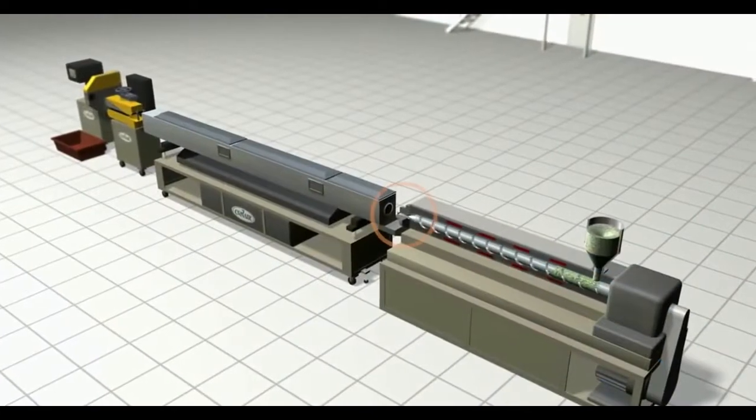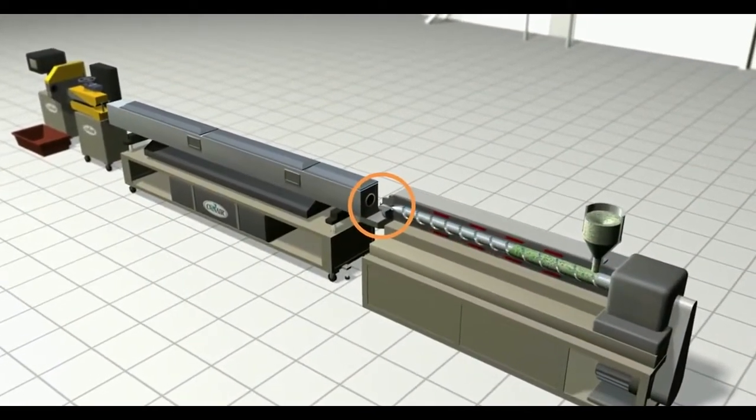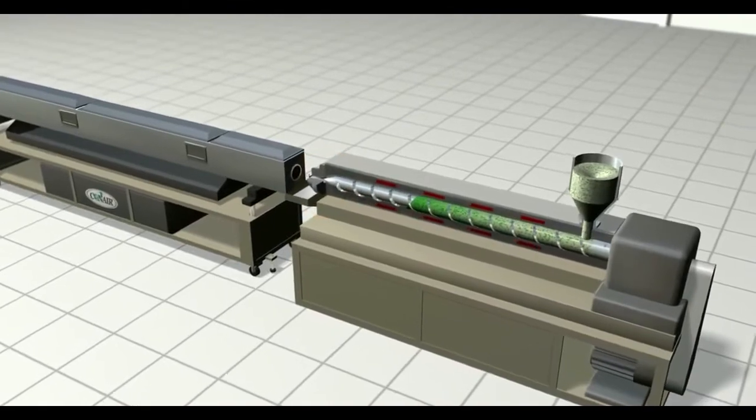Extrusion uses a die, a hollow form that molten plastic is pushed through to create its specific shape and thickness.